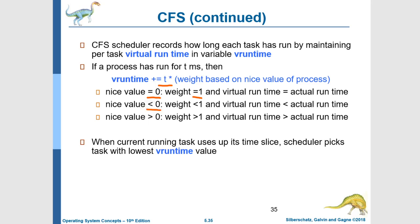If the nice value is less than 0 — recall that a low nice value means we want to give that task more preference — then its weighting will be less than 1. In that case, when we multiply the actual run time by a number less than 1, we get a virtual run time which is less than the actual run time. Because the virtual run time is less, it takes longer in real time for that task to complete its 1/n time slice, meaning that task gets more real run time in order to complete its time slice.